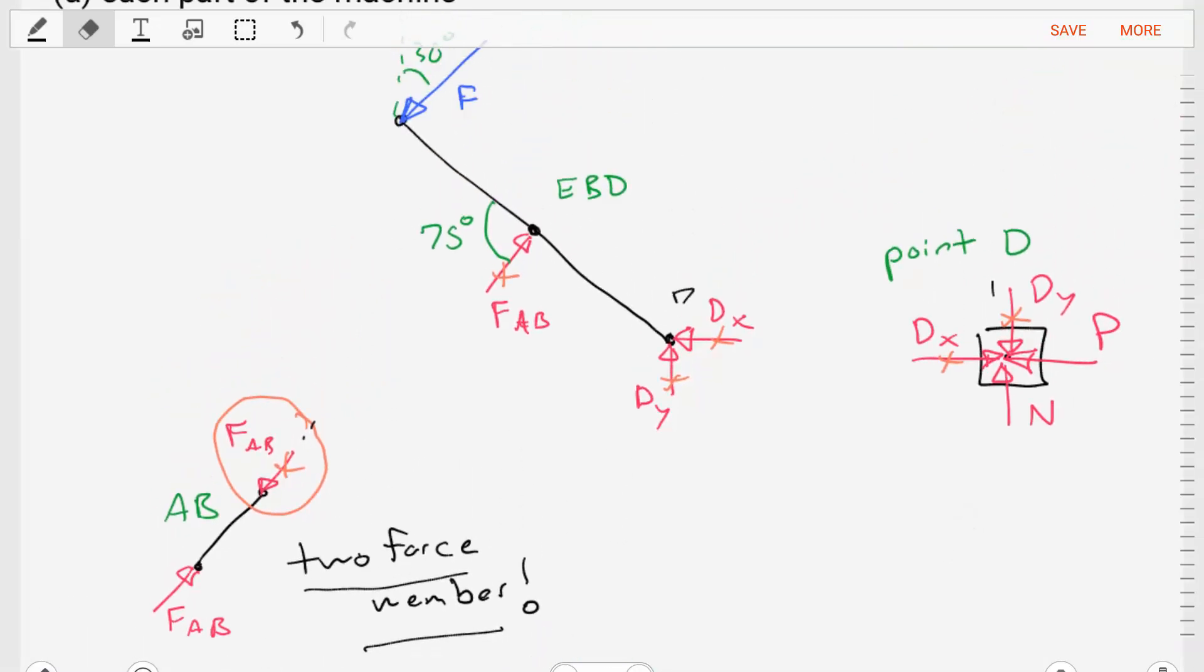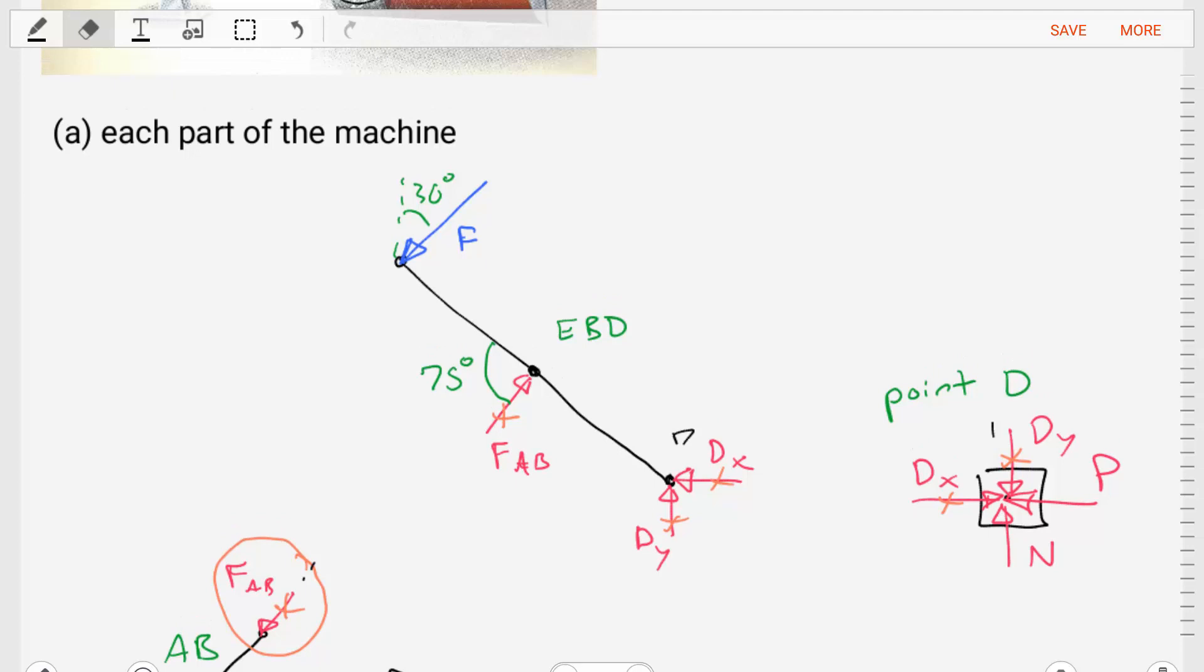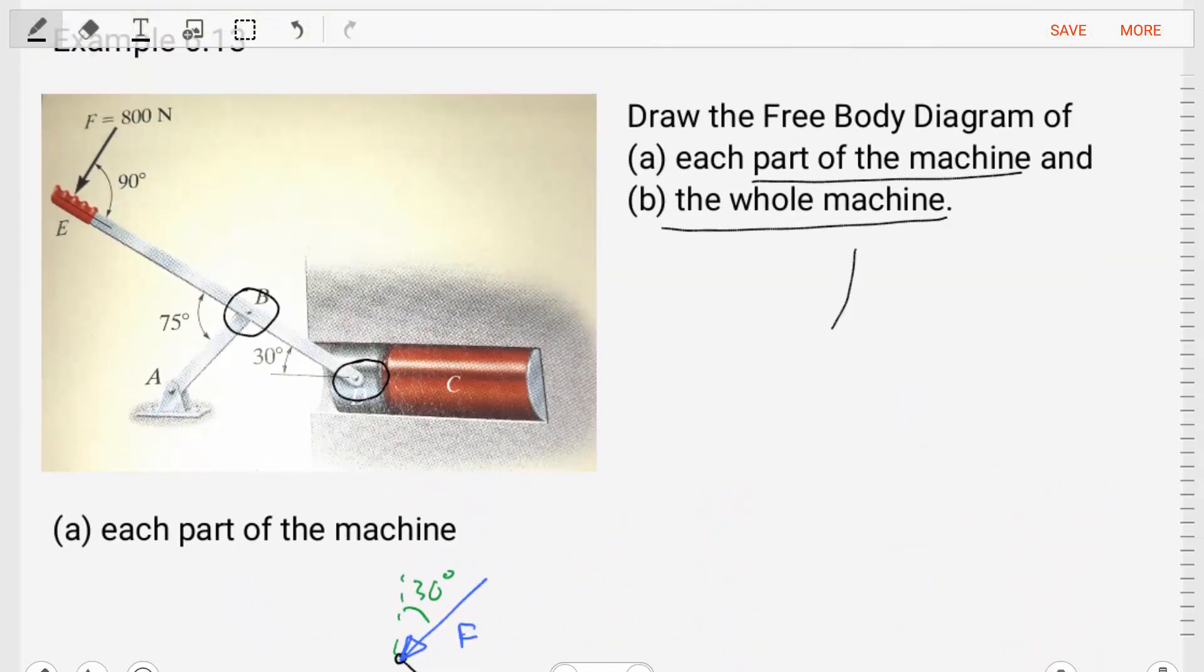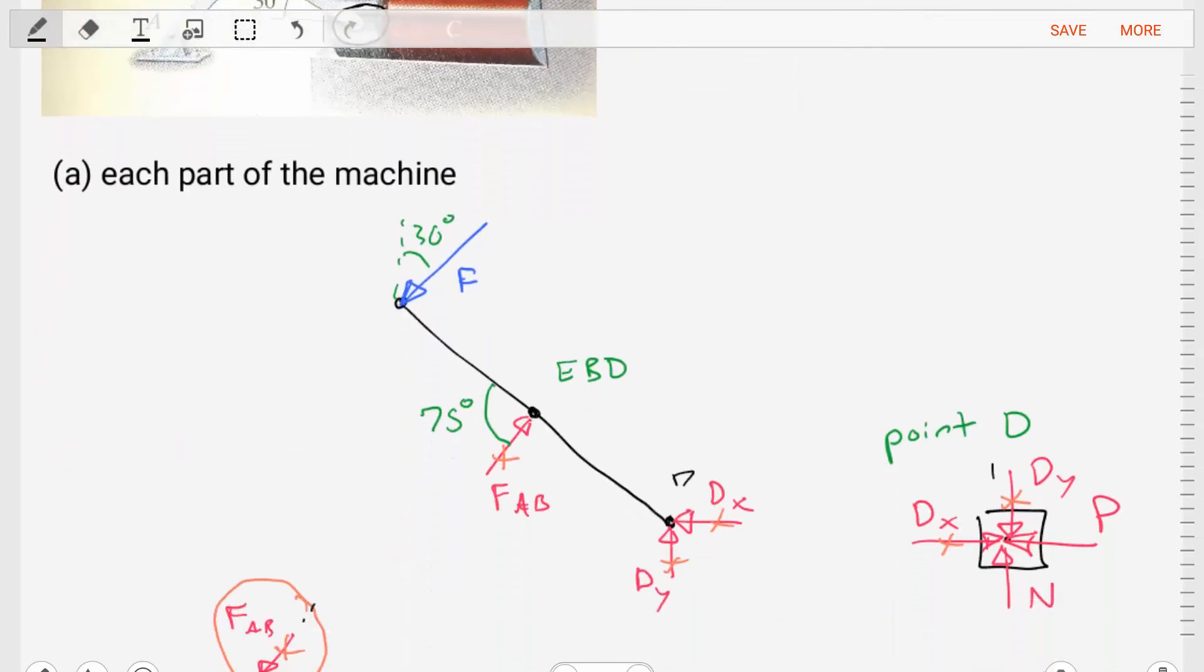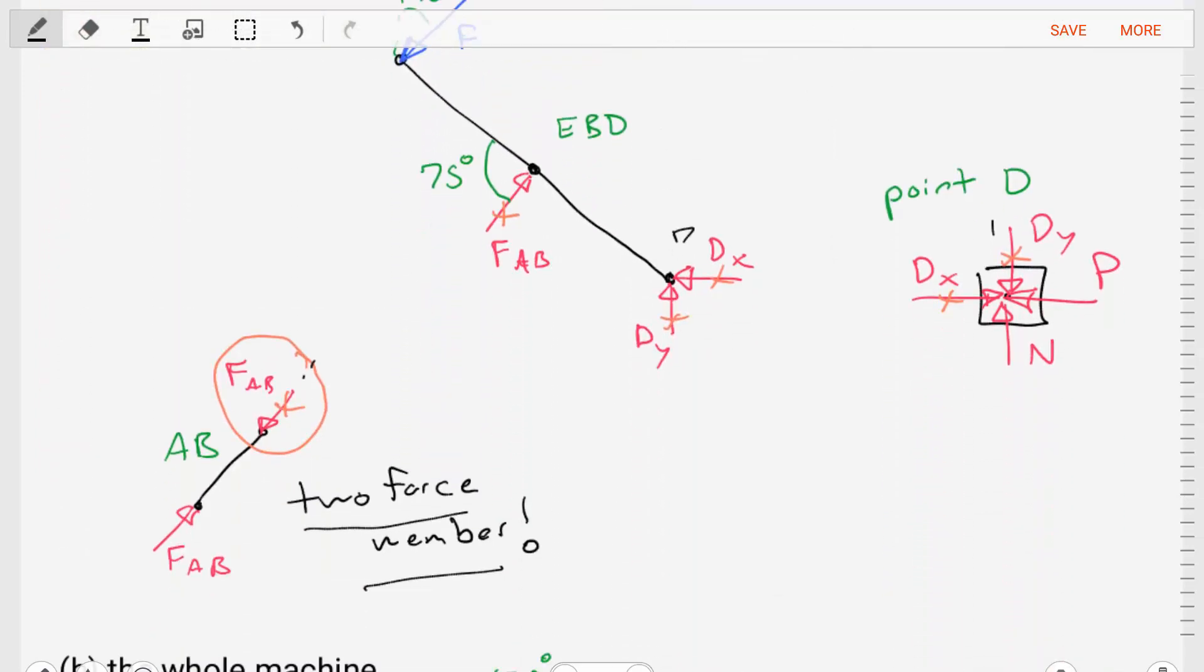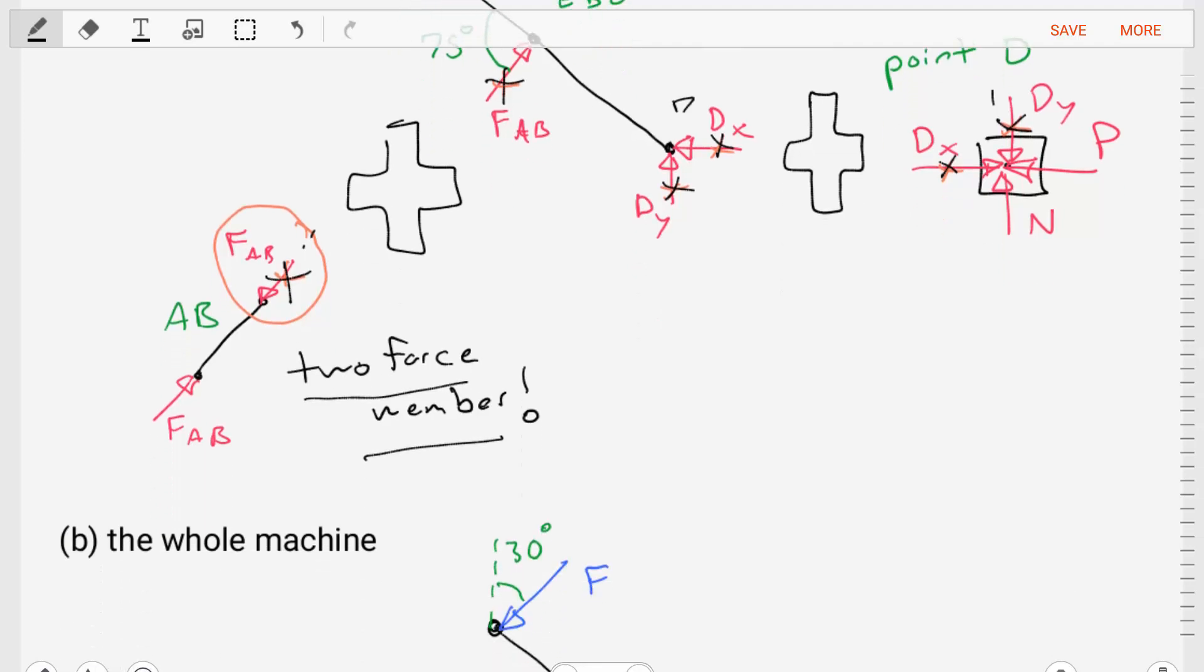We've dissected our machine into each of the members that's in the structure. Now let's do part B, which is creating a free body diagram for the whole machine. If we crafted our individual free body diagrams correctly, we should be able to snap these diagrams together to literally glue them together like Legos and arrive at the same diagram as our whole frame, where the internal forces, FAB and DX, cancel out because they are transmitted internal to the machine.